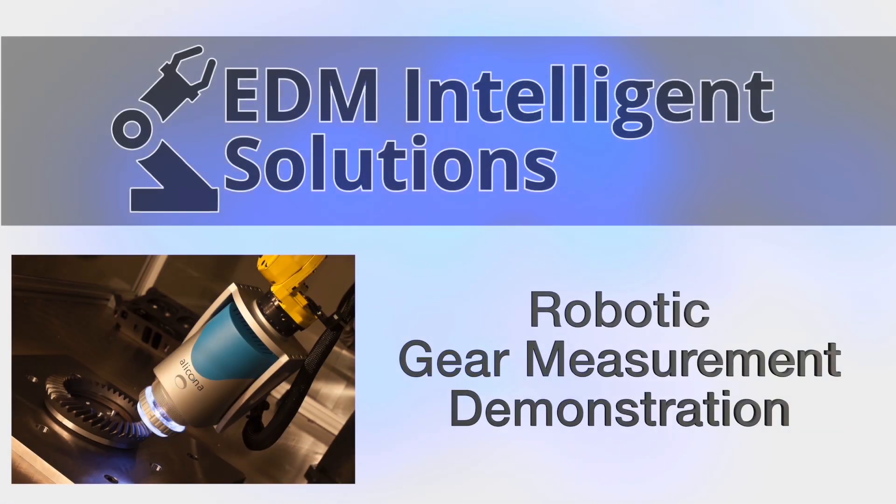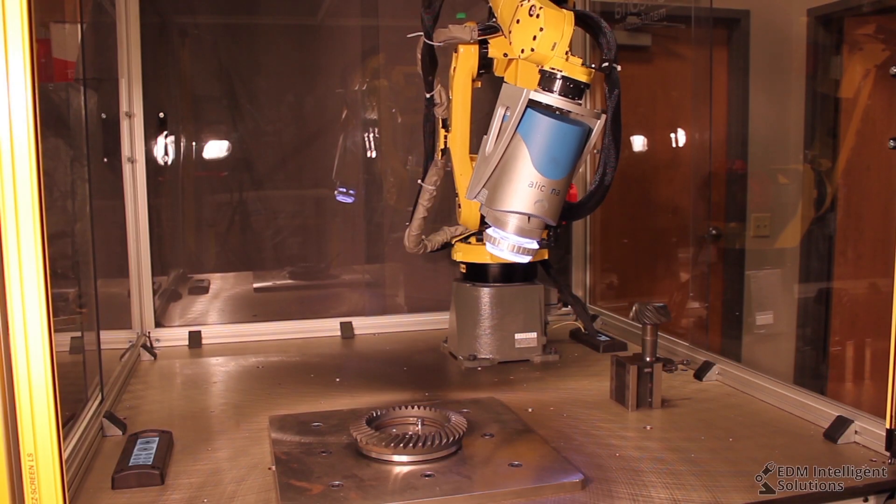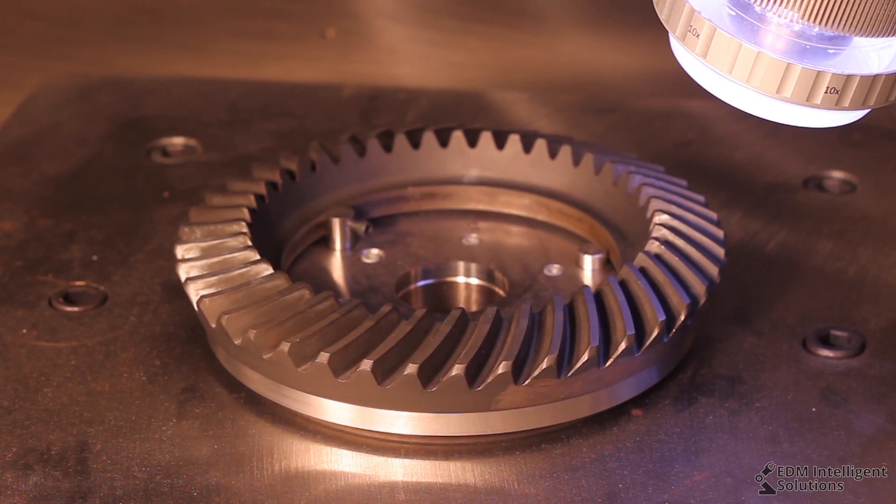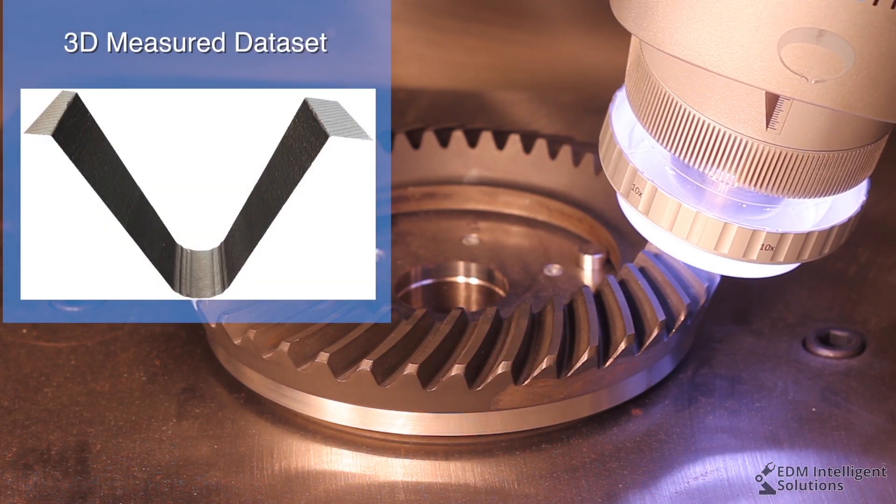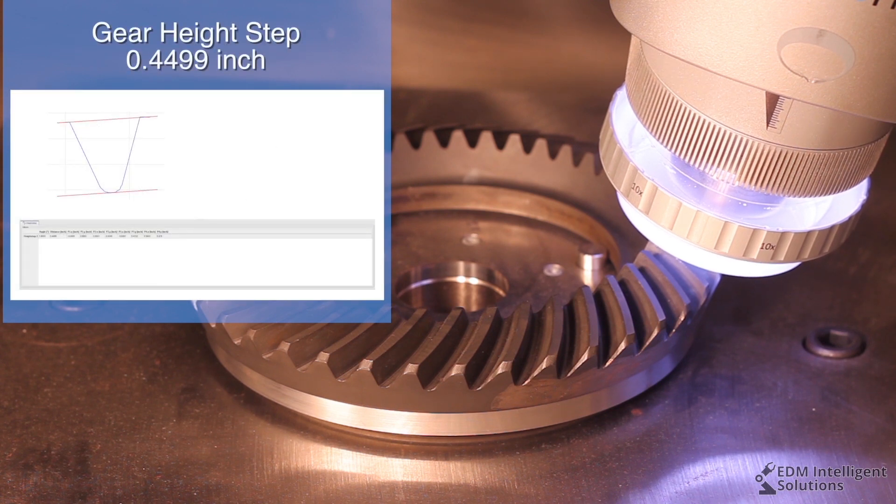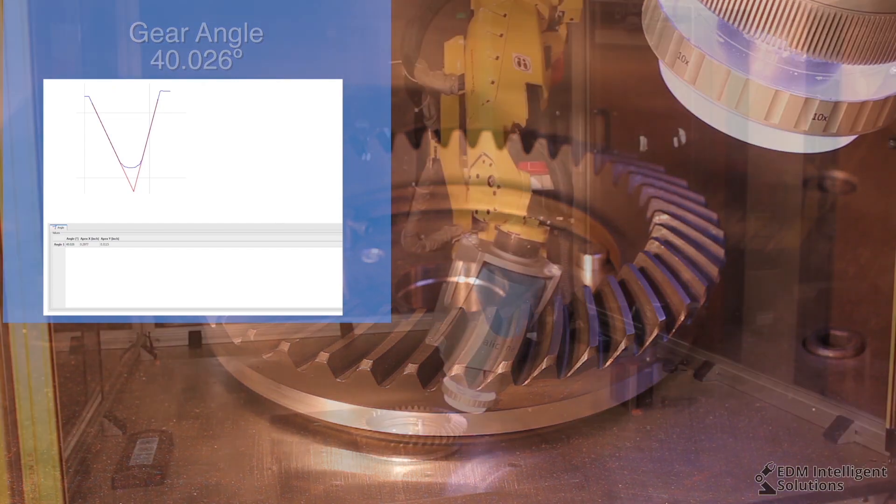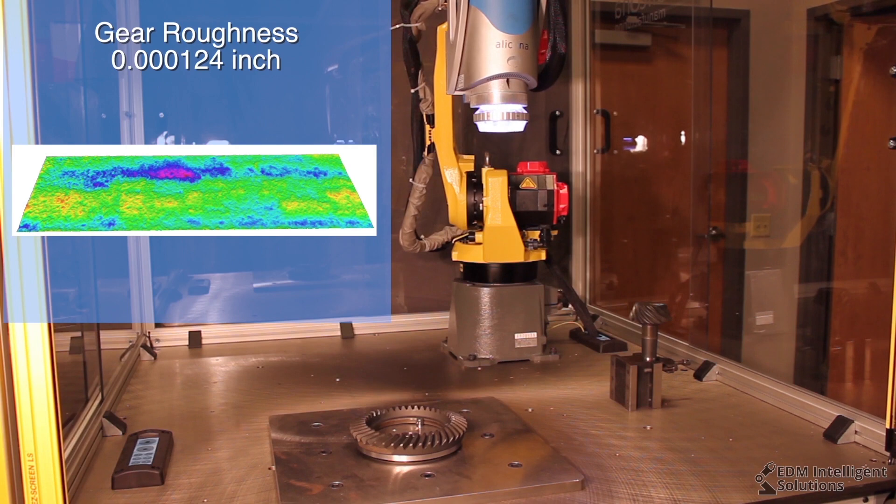FANUC America Authorized System Integrator EDM Intelligence Solutions has developed an extremely versatile automated solution for 3D metrology inspection of parts using a FANUC 6-axis robot to control the inspection. EDM's RSH-M10 robotic metrology inspection system.